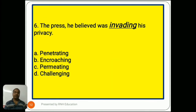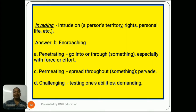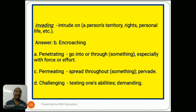Question number 6: 'The press, he believed, was invading his privacy.' Options are A) penetrating, B) encroaching, C) permeating, D) challenging. Invading means to intrude on a person's territory, rights, or personal life. So the right answer is B) encroaching. Option A, penetrating, means to go into or through something, especially with force. Option C, permeating, means spread throughout something. Option D, challenging, means testing one's abilities and demanding.